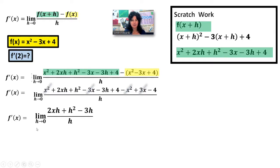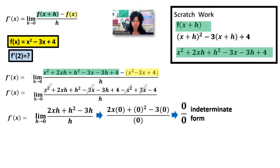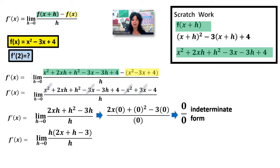Now that I have my limit set up, to find the limit step one is to substitute in the number and see what happens. I replace every h with zero: 2x times zero plus zero squared minus 3 times zero — the numerator is zero, so we get zero over zero, which again is an indeterminate form. So the next thing to do is factor, cancel, resubstitute. Looking at the numerator, all terms have an h in common, so I factor out the h. Now we can cancel this h with the h in the denominator, leaving the limit as h approaches zero of 2x plus h minus 3.